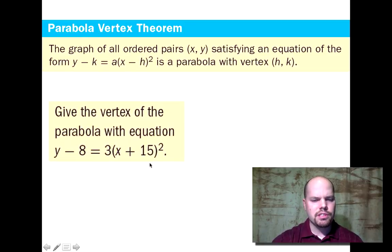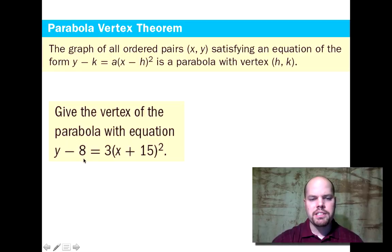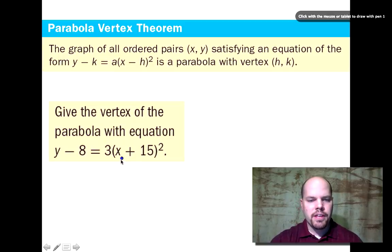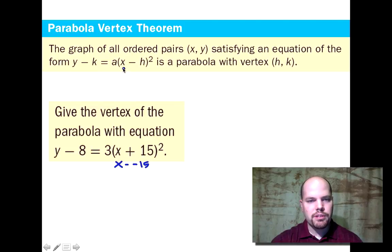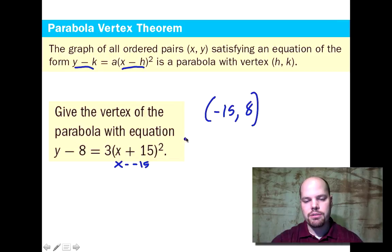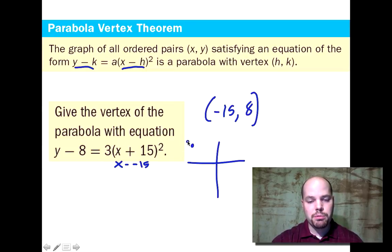Let's look at an equation and see if we can tell what the vertex is. We have the parabola with equation y minus eight equals three times the quantity x plus 15, quantity squared. As shown in GeoGebra, we'd normally write this as x minus negative 15, because we always do x minus and y minus. So if you see x plus, that means it was minus a negative, making the x value of the vertex negative 15. And y minus eight means the y value of the vertex is positive eight. So the vertex is at (-15, 8), and this three makes the parabola open steeper.